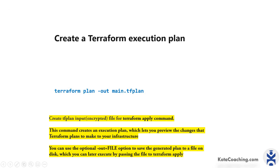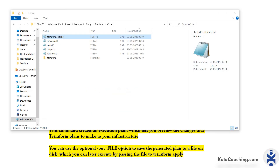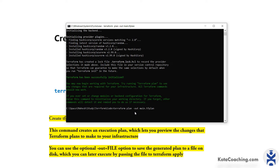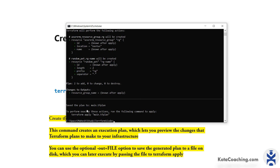Now we need to create a Terraform execution plan. We can use 'terraform plan' alone, but if you want to write the execution plan to an output file, you can define the output using '--out' and give the file a name like 'main.tf.plan'. This command creates an execution plan, which lets you preview the changes Terraform plans to make to your infrastructure. Let me run this command: 'terraform plan -out main.tf.plan'. The plan is saved to main.tf.plan.